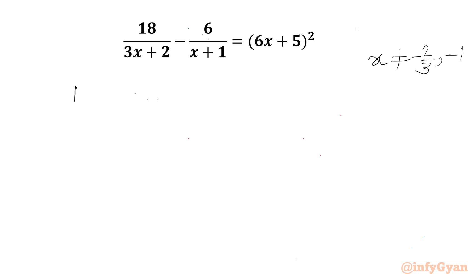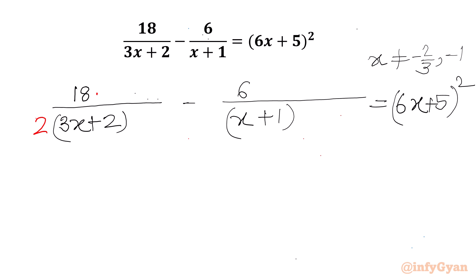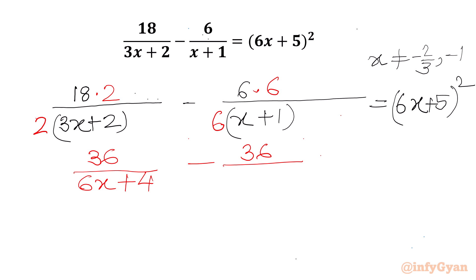Now I will write our equation once: 18 over (3x + 2) minus 6 over (x + 1) equals (6x + 5) squared. We will multiply numerator and denominator — multiplying by 2 on the left term and by 6 on the right term — to get 36 over (6x + 4) minus 36 over (6x + 6) equals (6x + 5) squared.